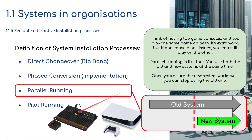Think of having two games consoles — an old Atari 2600 and a PlayStation 5 — and playing the same game on both. It's extra work, but if one console has issues, you can still play on the other. So if you're playing the old 1980s version of Pac-Man on the Atari and the PS5 version breaks, you can switch back. Parallel running is like that — you use both the old and new systems at the same time, and once you're sure the new system works well, you stop using the old one.